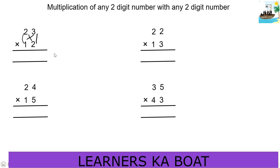And now we will do it in general. First, we will do the right side: 2×3 is 6, so 6 is 6. Next step: 2×2 is 4, plus 1×3 is 3, so 4 plus 3 is 7, giving us 7. Next, we will do the left side: 2×1 is 2, so 2 is 2.